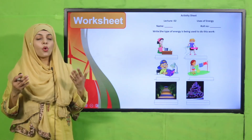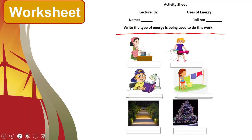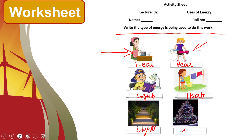Now is the time for practice. Quickly download this worksheet from the description box below this video, or get it in print form from your teacher. Write down your name and roll number, then write the type of energy being used for each task. The mother is cooking food — heat energy. The girl is pressing clothes — heat energy. The boy is reading a book — light energy. The girl is drying clothes — heat energy. Light is being produced — light energy.